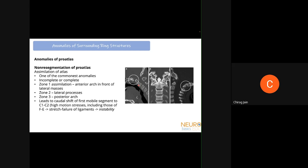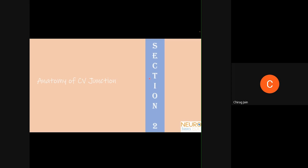One of the most common anomalies of the CV junction is non-resegmentation of the pro-atlas — the atlas gets assimilated so that it becomes part of the skull base instead of being separate. Atlas assimilation can be complete or incomplete: zone one is the anterior arch, zone two is the lateral processes, and zone three is the posterior arch being fused with the occiput. Because the atlas is assimilated, the first mobile segment shifts from C0-C1 to C1-C2, generating significantly high motion stresses that cause ligaments to fail, leading to instability. Vertebral artery anomalies are also commonly associated with atlas assimilation.